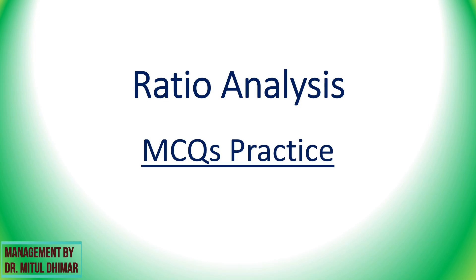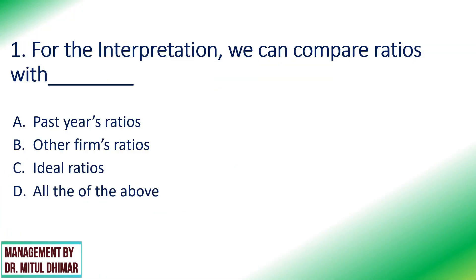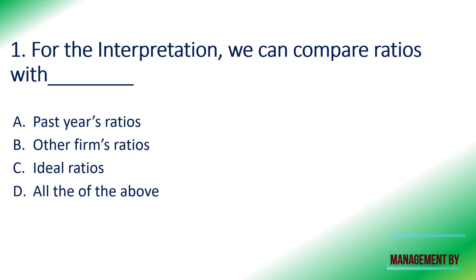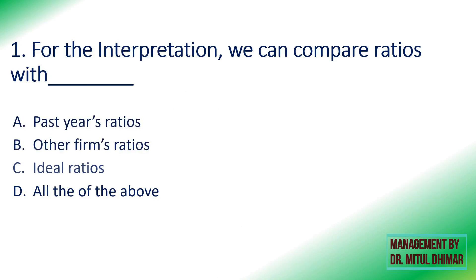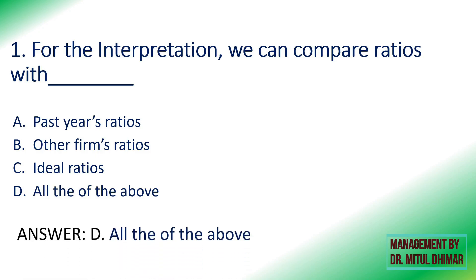The first question: for interpretation, we can compare ratios with past years' ratios, other firms' ratios, ideal ratios, or all of the above. The answer is all of the above — we can use all three of these methods for comparison to make an interpretation.